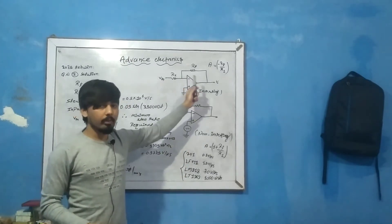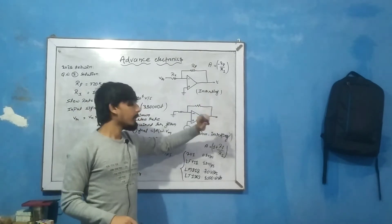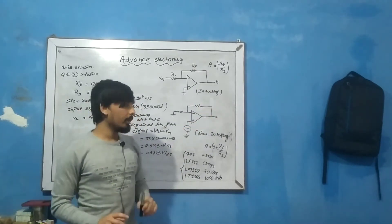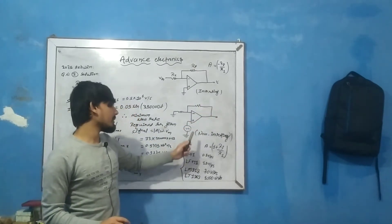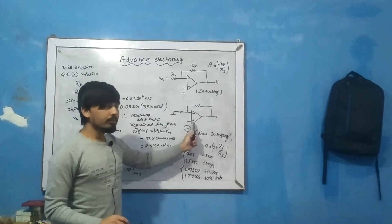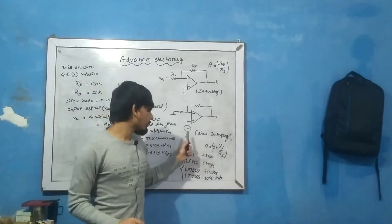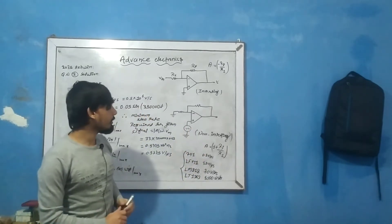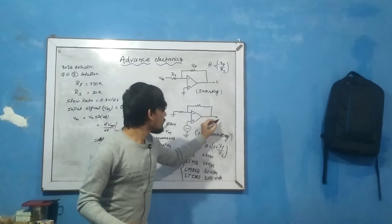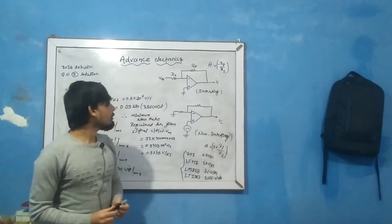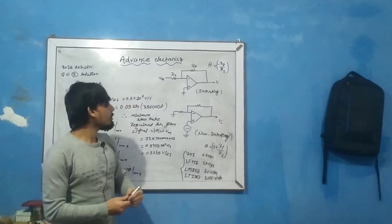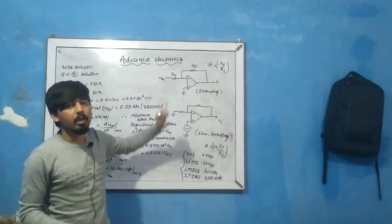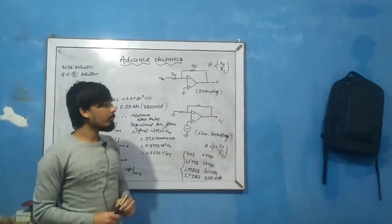In an inverting op-amp, the input is applied to the negative terminal. For a non-inverting op-amp, the input is applied to the positive terminal — that is the key difference. In this circuit, we have a feedback resistor RF and input resistor R1.